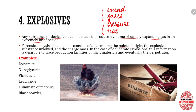Forensic analysis of explosions consists of determining the point of origin, the explosive substance involved, and the charge mass. To determine what exploded, we need to know where the explosion took place and what substance was used. The explosive material found at the scene can link us to the perpetrator — for example, if dynamite was used, investigators can contact suppliers and ask who purchased a large amount, leading to possible culprits.